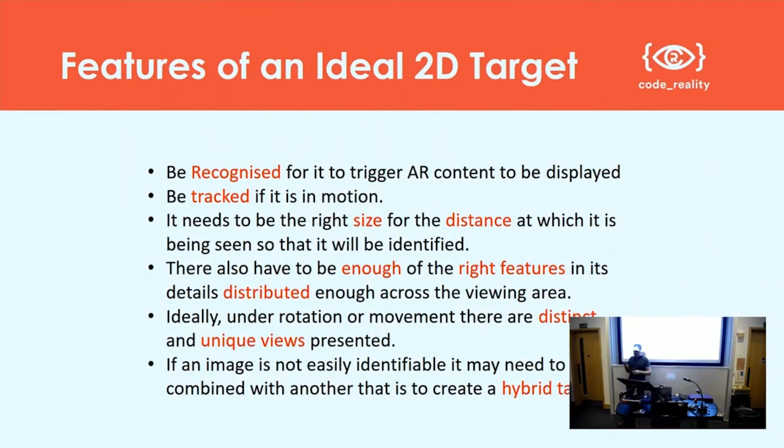It's important that the AR marker presents unique views when you're looking at different orientations. If you're looking at it right-side up, it should look very different to when it's turned 90 degrees or 180 degrees. There must not be any horizontal, vertical, or rotational symmetry. If you rotate it 45 degrees, it shouldn't look the same as it does when it's been rotated 45 degrees the other way. These factors are particularly important, and you'll see examples in a moment.